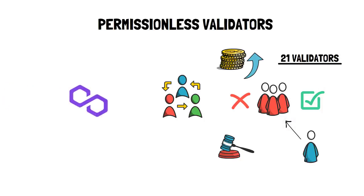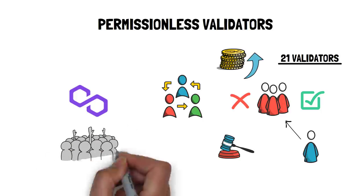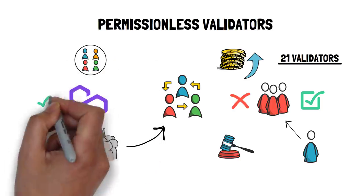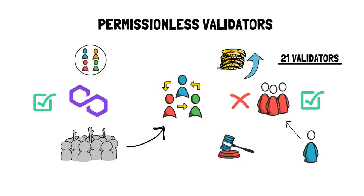In Polygon commit chain, anyone can join the network and start validating the state of the blockchain. This is important as it allows any participants to become validators and check by themselves that all transactions are processed correctly.